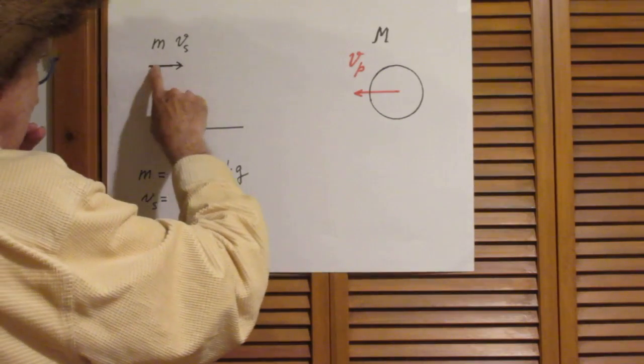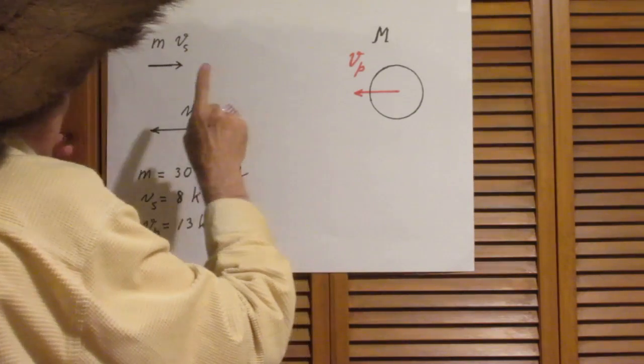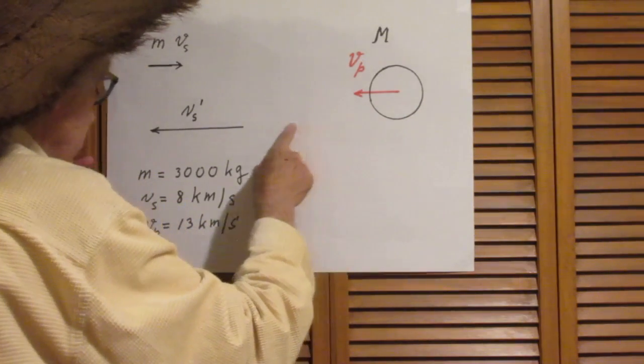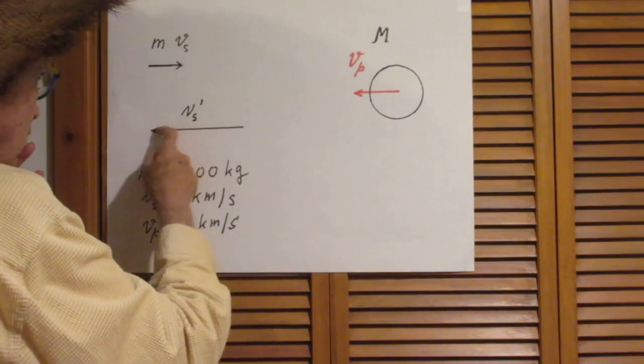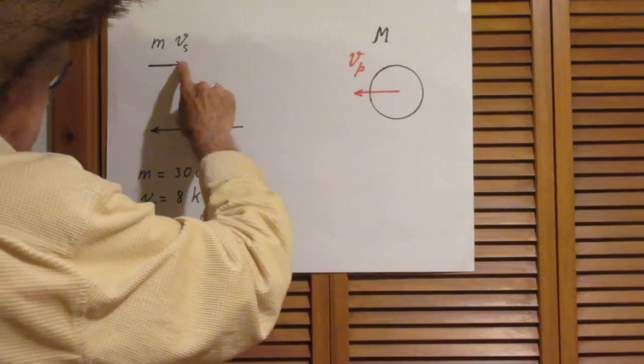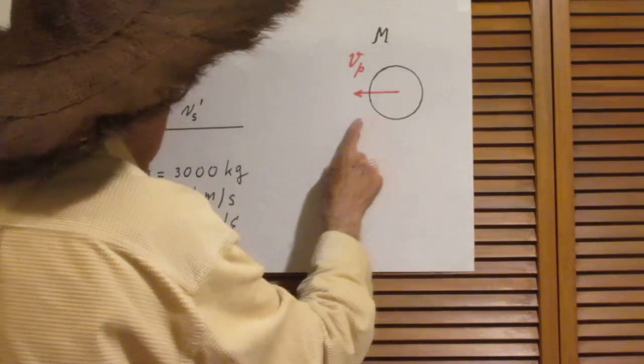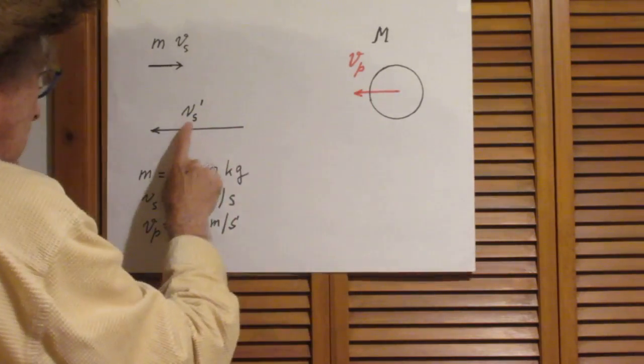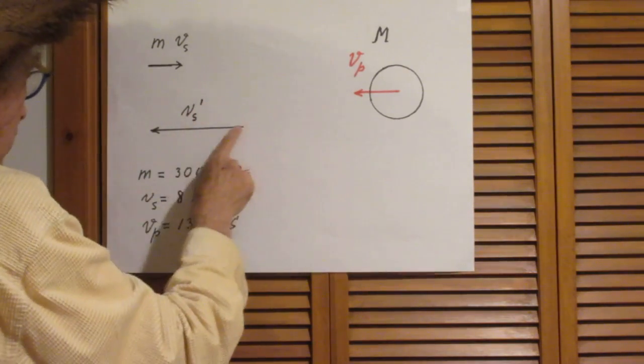So the satellite goes this way and it is manipulated so cleverly that it goes around the planet and comes back in this direction. So it changes its direction by 180 degrees. Of course we both know that as it goes to this planet it will increase its speed. It will go very fast here.